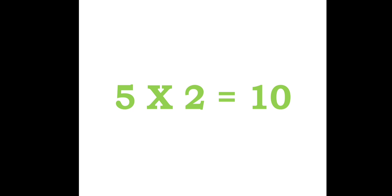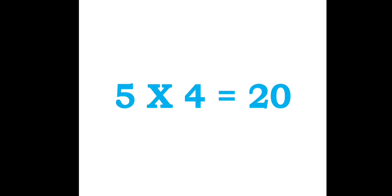5 zeros are 0, 5 ones are 5, 5 twos are 10, 5 threes are 15, 5 fours are 20, 5 fives are 25,